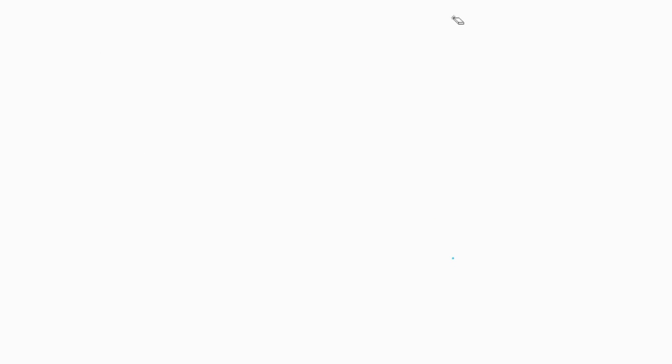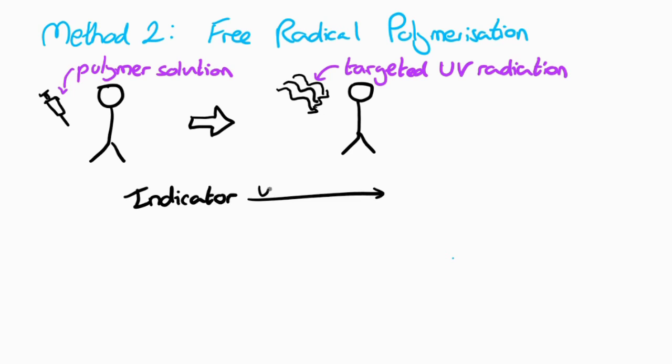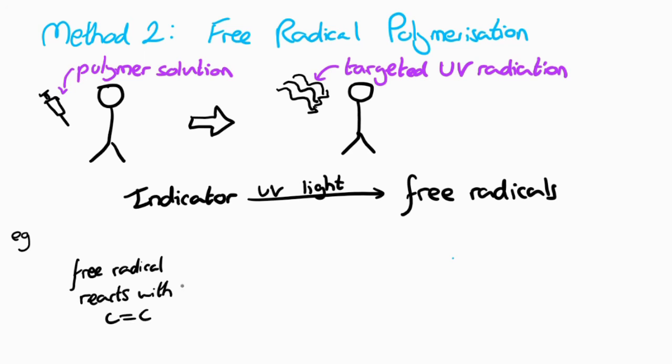An alternative is free radical polymerization, which is a type of chain growth polymerization. It uses UV radiation to activate initiator molecules by generating radicals through homolytic fission. One of the more well-researched hydrogel systems like this uses modified PEGs containing unsaturated carbon double bonds. The free radicals react with the double bond, adding a reactive radical center to the PEG chains.